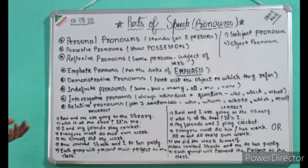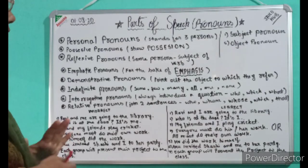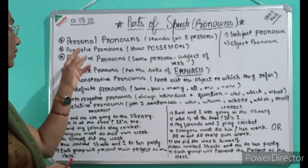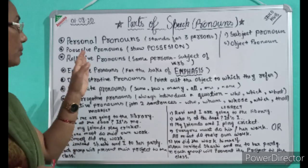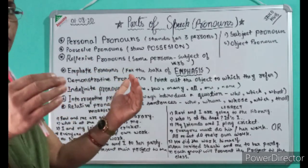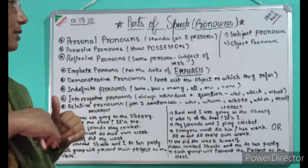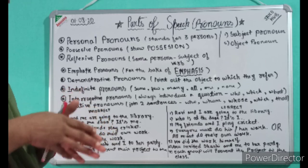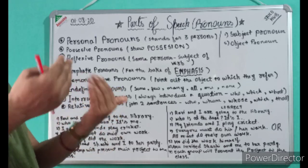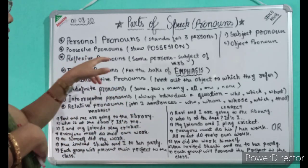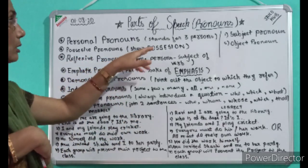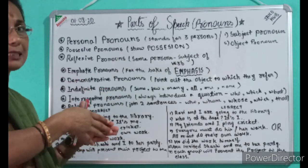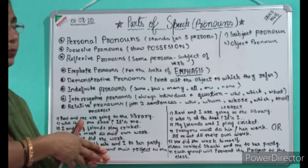Now it's time for possessive pronouns. What is possessive pronoun? The word itself defines it — possessive means the things which I possess. Suppose, 'This is my book.' Whose book is this? My. So it shows possession — whose things it belongs to.